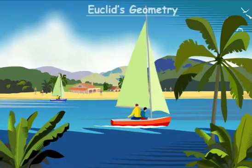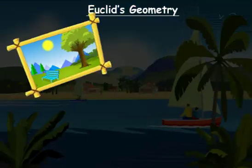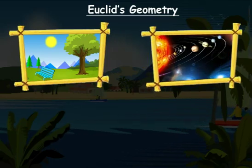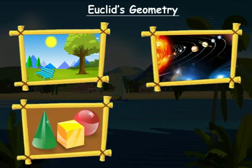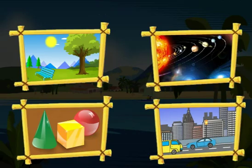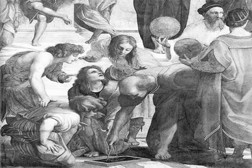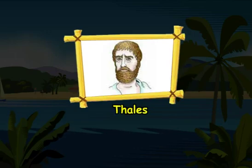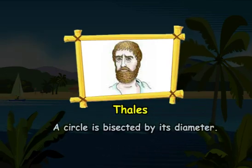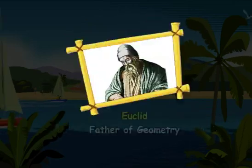You can see geometry everywhere — in nature, space, art, and architecture, to name a few. Geometry was being applied and developed from ancient times. At that time, all developments were passed on to the next generation without being discussed or proved. Do you know Thales was the first mathematician who gave the first known proof in geometry?